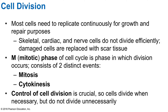Most cells need to replicate continuously for growth and repair. Exceptions are skeletal muscle, cardiac, and nerve cells, which do not divide very efficiently — damaged cells get replaced with scar tissue. The mitotic phase, or M phase, is when cell division takes place. Controls of cell division are crucial. Cells divide when necessary but not unnecessarily. In cancer, cells divide continuously in an uncontrolled, unregulated way — producing non-functional cells and uncontrolled growth.